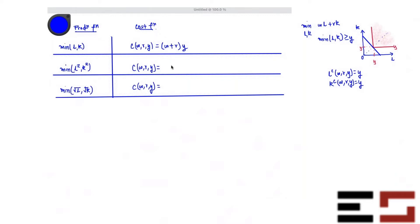Okay, so what about the next one? What is the cost function for the next one? Yes, W plus R square root of Y. That's right. Okay. And what about the next one? Is this clear?